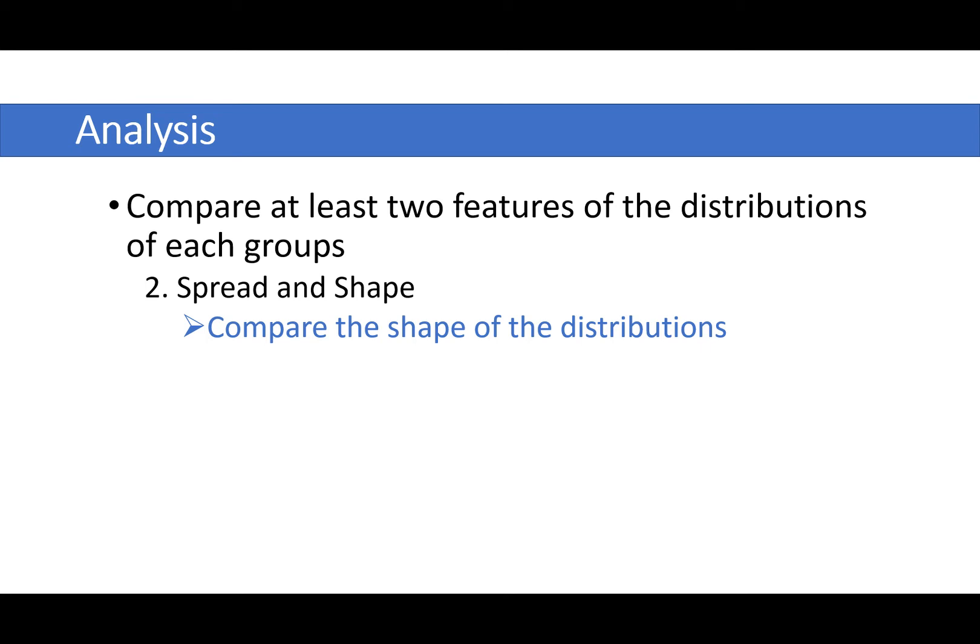Is one closer to a normal distribution than the other? Is one perhaps more squished up or skewed? So you can look at if there's any skew to either of your groups. Is it right skewed, left skewed? How do they compare?